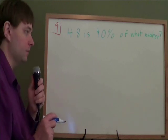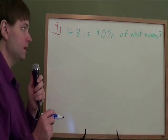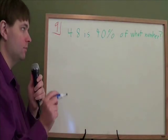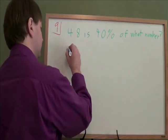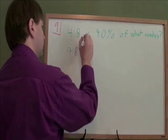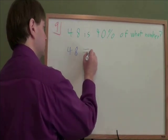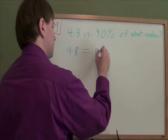Here we have a word problem involving percentages. For these problems, the best way to go about them is to change it word by word into a math equation. So 48 is 48. The word 'is' means equals. 40 is 40.